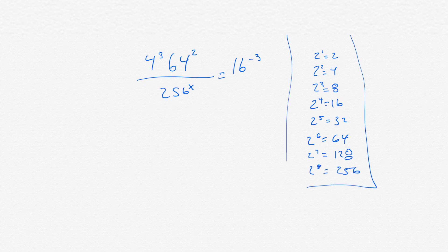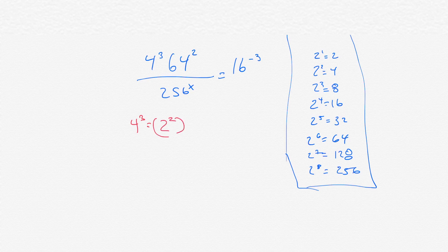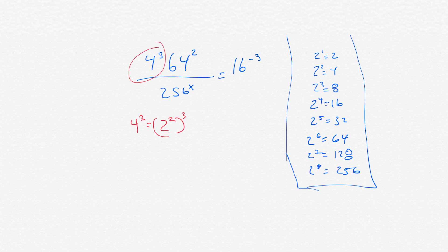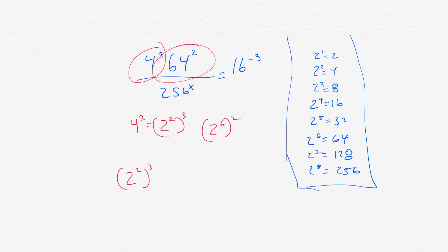All right, so those are the exponents, 2 raised to different exponents. So let's first start with this one right here, the 4 cubed. If you think of 4 cubed, 4 cubed is like 2 squared cubed. So that number there, we'll put 2 squared cubed. Then, we have 64 squared, and 64 is 2 to the sixth squared. So then we have 2 to the sixth squared.